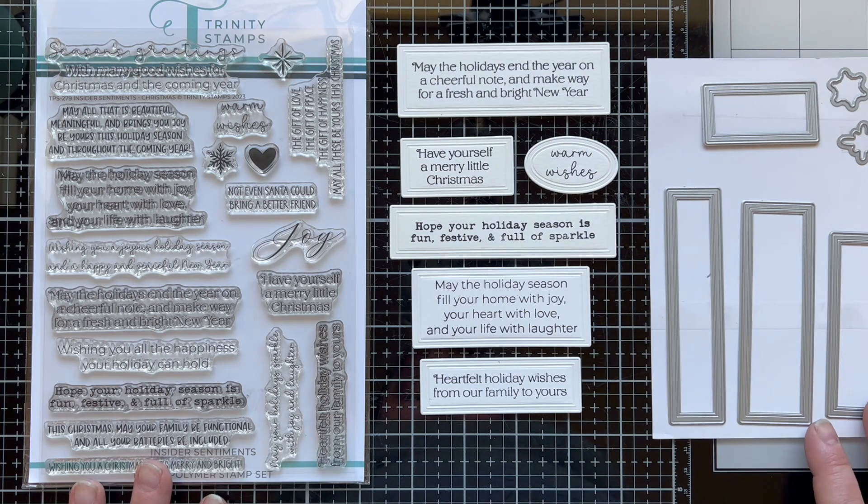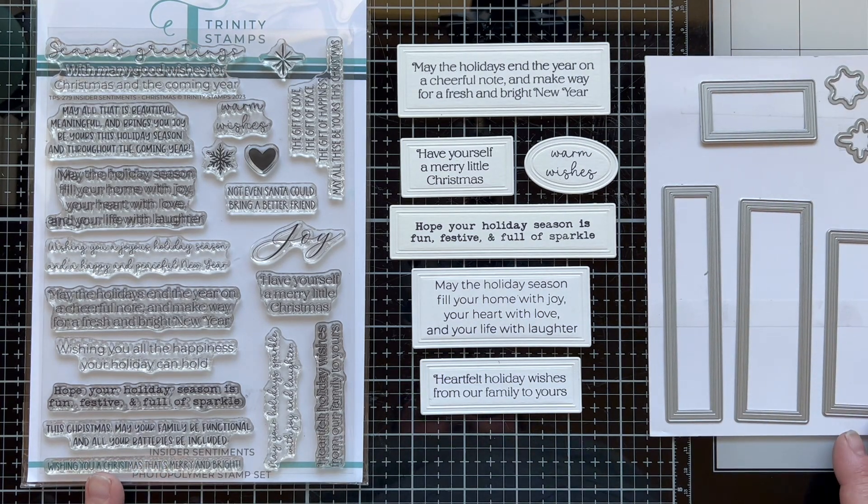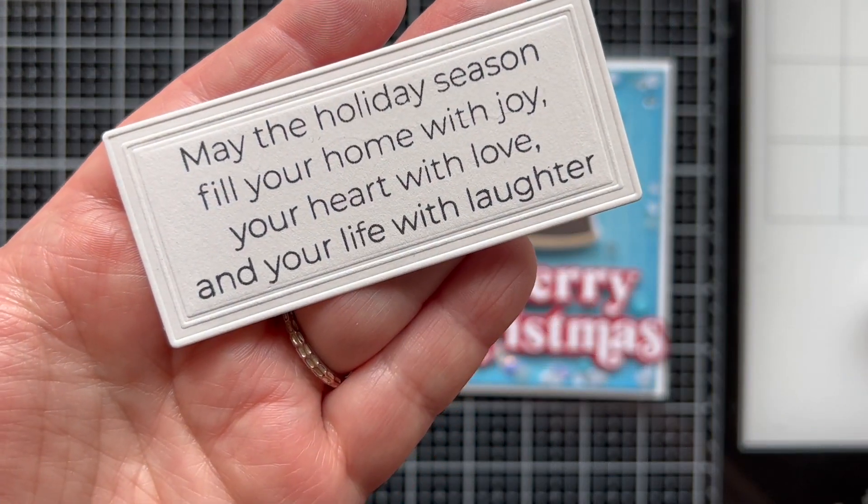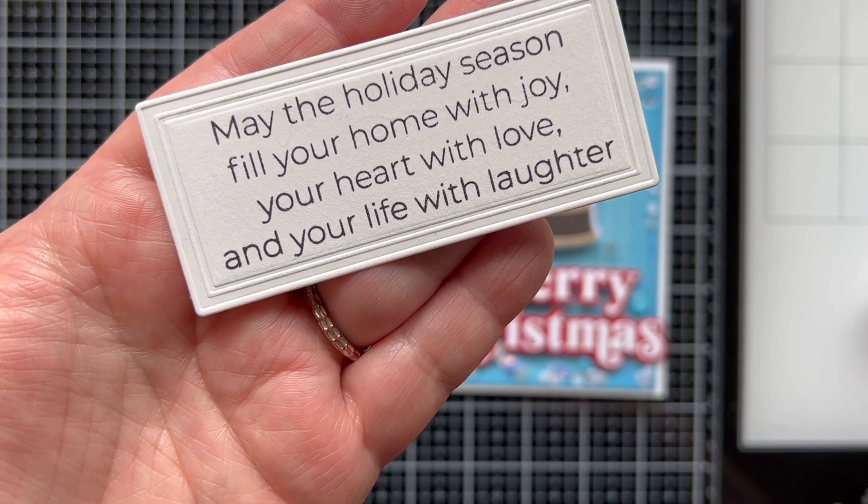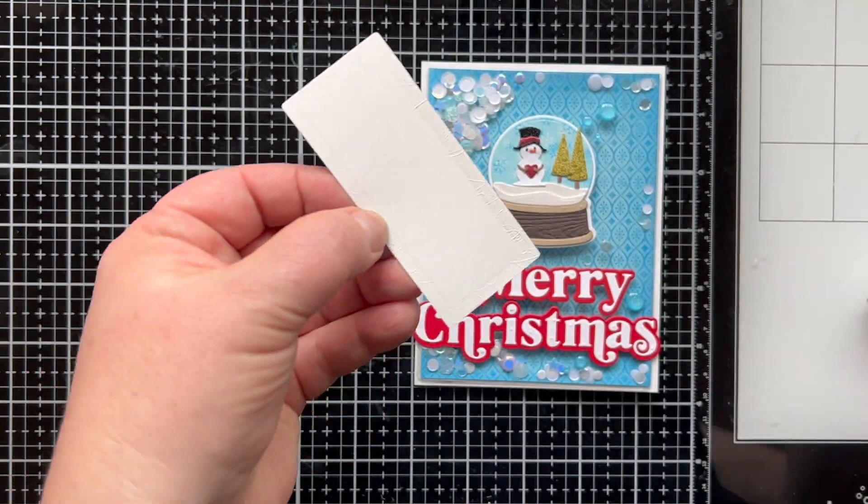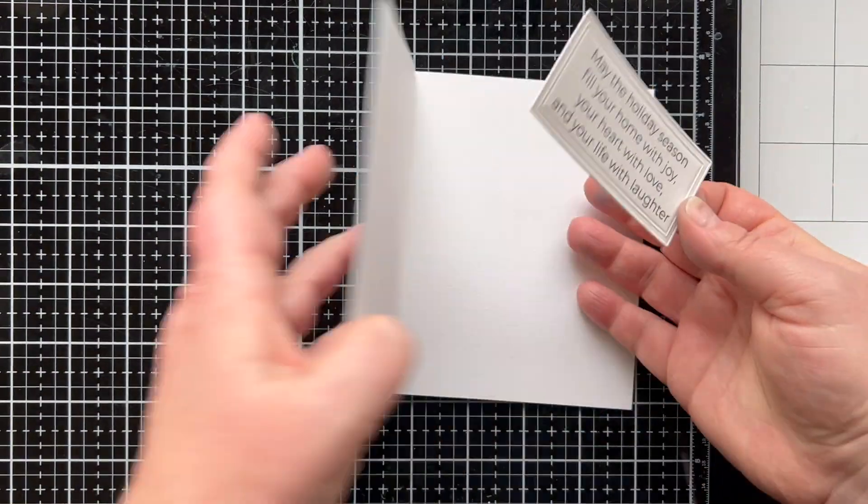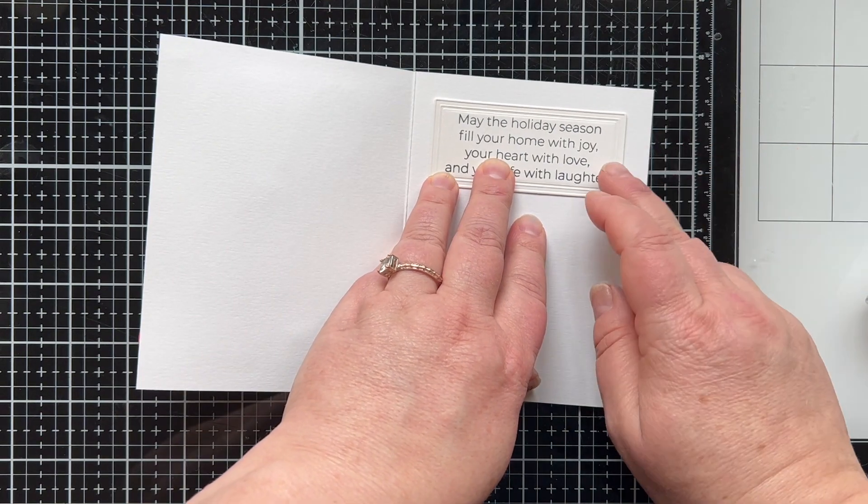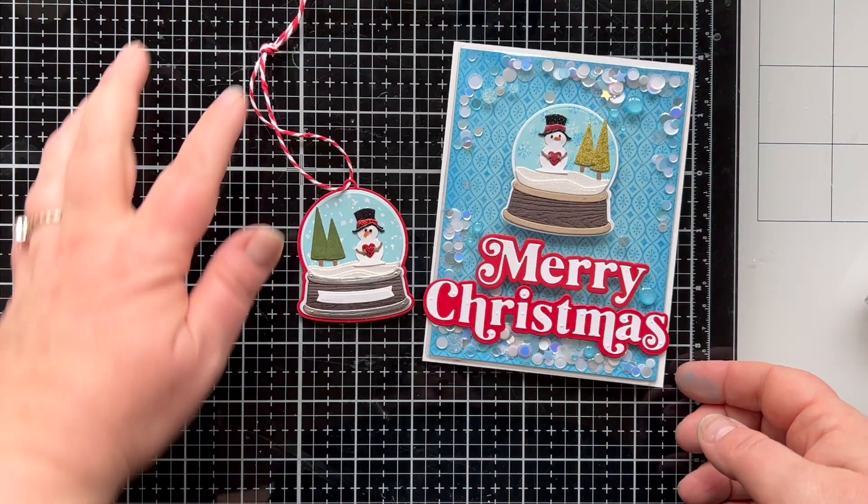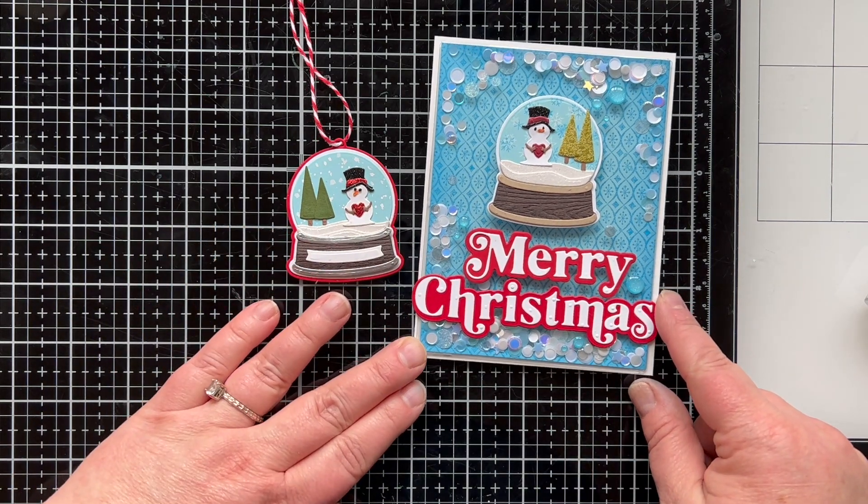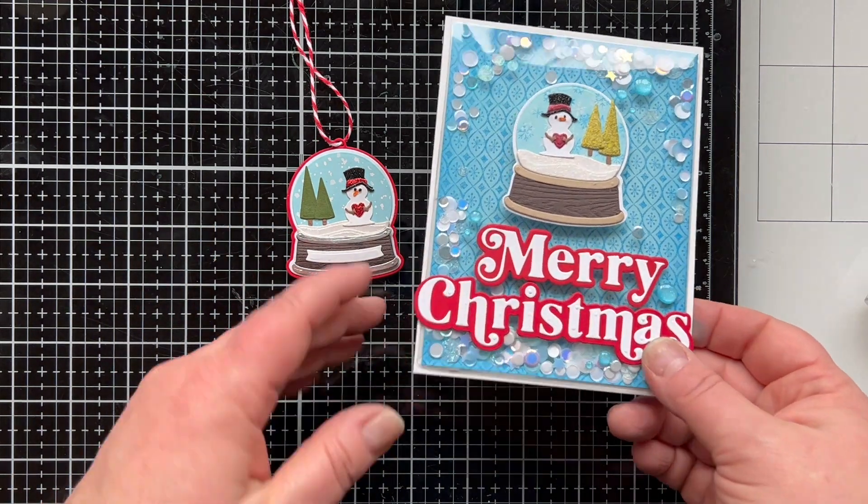I am going to bring in a cool stamp set. This is the insider sentiment stamp set for Christmas. So I'm going to take this one, die cut out with the coordinating die set. The coordinating die set really is a set you can use completely on its own, it creates labels. I love that you could make labels for anything, stamp whatever you want in them and add them to a tag, the front of a card, the inside, whichever you like.